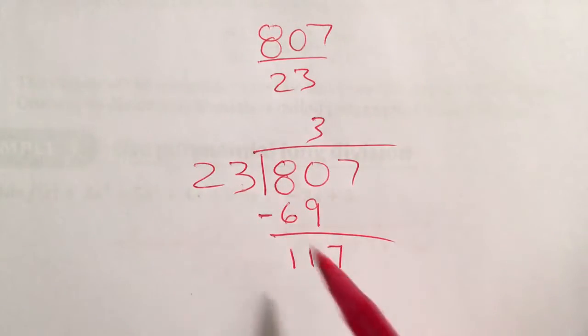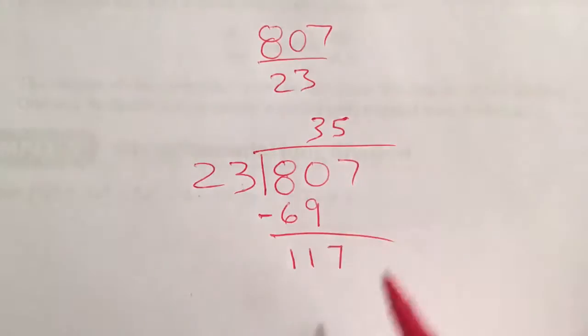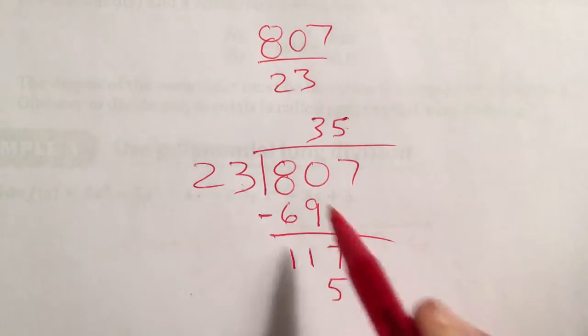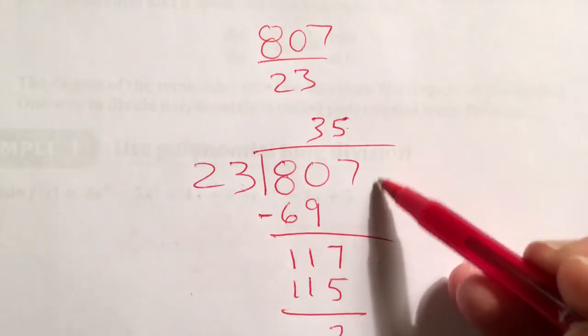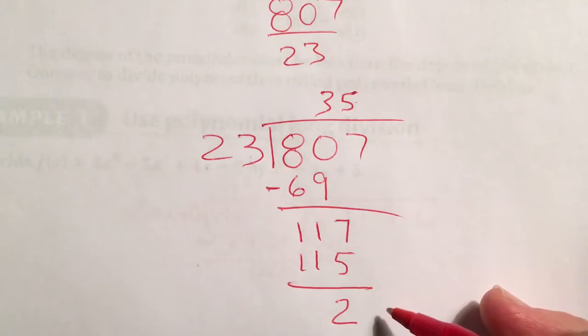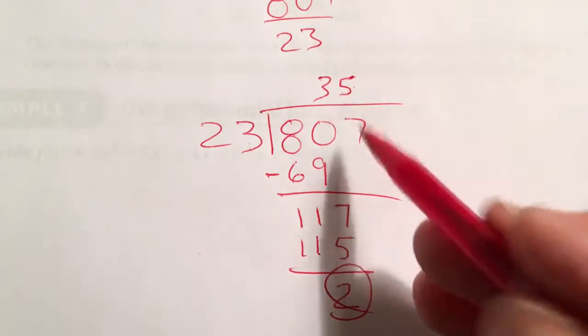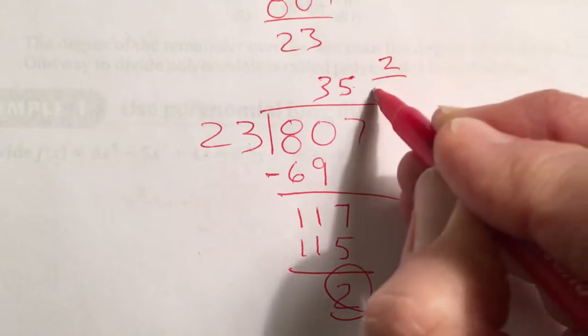We'll see how many times 23 goes into 117. I think it's about 5, pretty close to 5. 5 times 3 is 15, carry the 1. 5 times 2 is 10 plus 1 is 115. When you subtract that, you get a 2. You can see there's no more numbers to pull down, so that 2 becomes our remainder. Our quotient is 35 and our remainder is 2, or the fraction 2 over 23.